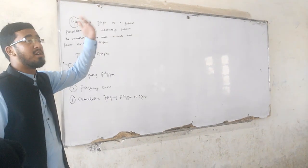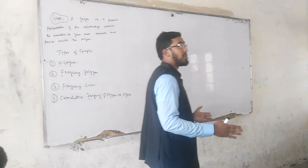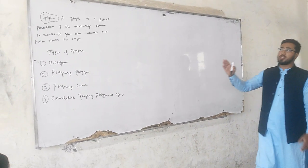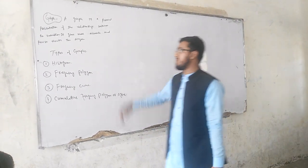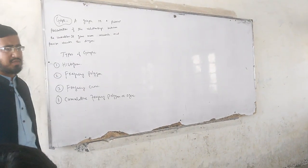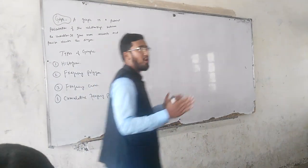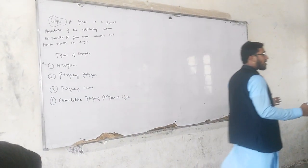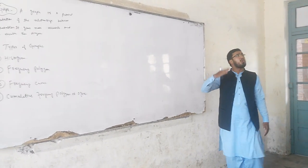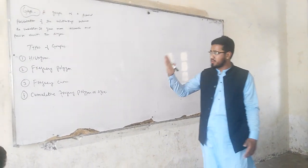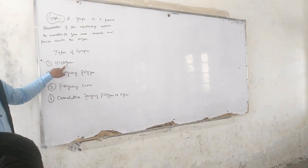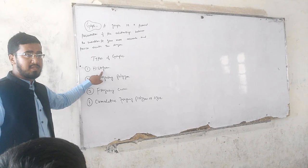We can draw the diagrams in order to show the score of the students, score of the players. This is the procedure under which you people draw the graph. Now we are going to discuss the types of the graph. There are so many types of graphs in statistics, but we are limited to a few of them. The first is your histogram.